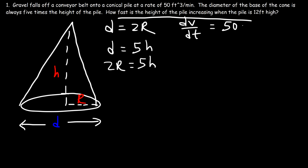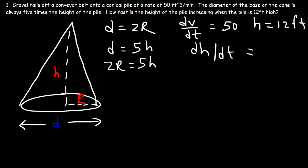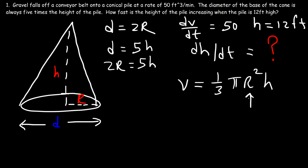Our goal is to determine the rate at which the height of the pile is changing when the pile is 12 feet high, so we know H equals 12. The rate at which the height is changing is dh/dt, and that's what we're looking for. To calculate dh/dt we need to relate height to volume, since we have dV/dt. The volume of a cone is one-third pi r squared times the height, but if we differentiate this we'll have both dV/dt and dh/dt, plus dr/dt — we don't want two unknowns — so we need to replace r with H.